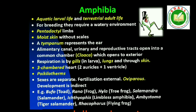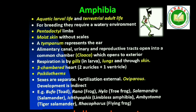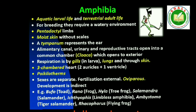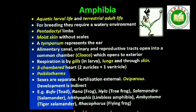Fourth is Class Amphibia. As the name indicates, Greek word amphi meaning dual and bios meaning life, amphibians can live in aquatic as well as terrestrial habitats. Most of them have two pairs of limbs. Body is divisible into head and trunk. Tail may be present in some. The amphibian skin is moist without scales. The eyes have eyelids. Tympanum represents the ear. Alimentary canal, urinary and reproductive tracts open into a common chamber called cloaca which opens to the exterior. Respiration is by gills, lungs and through skin. The heart is three-chambered, two auricles and one ventricle. These are cold-blooded animals. Sexes are separate. Fertilization is external. They are oviparous and development is indirect. Examples: Bufo (toad), Rana (frog), Hyla (tree frog), Salamandra (salamander), Ichthyophis (limbless amphibia).